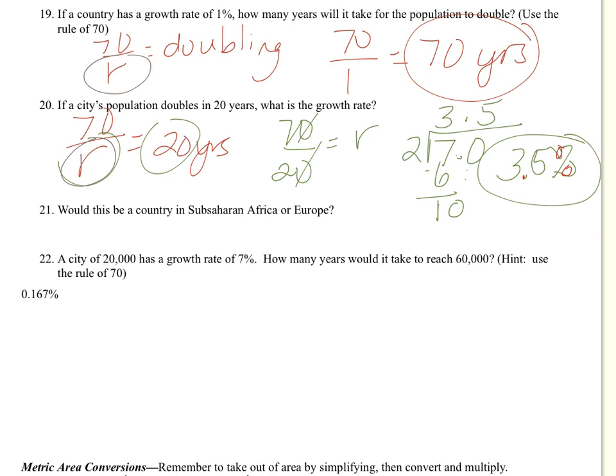21, would this country be in sub-Saharan Africa or Europe? Well, it is a very high growth rate. It's doubling in 20 years. And our populations do not double in 20 years in Europe. So the answer here is not Europe. The answer would be sub-Saharan Africa with a very fast growth rate.